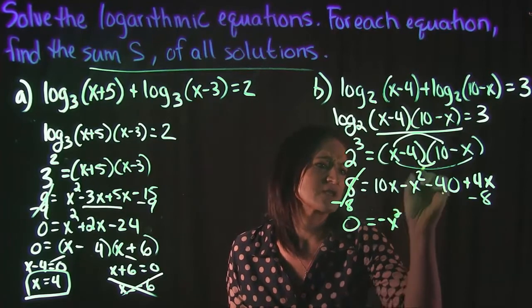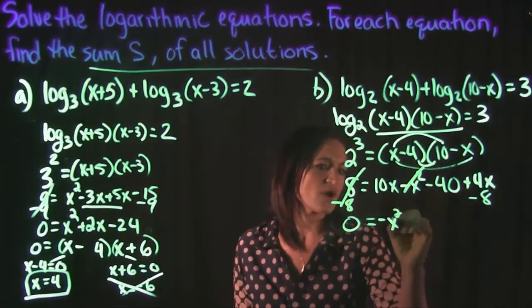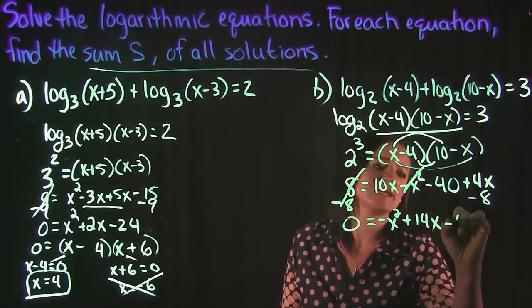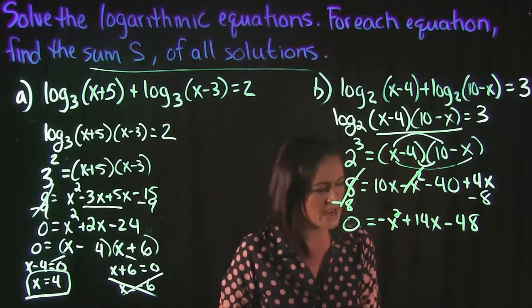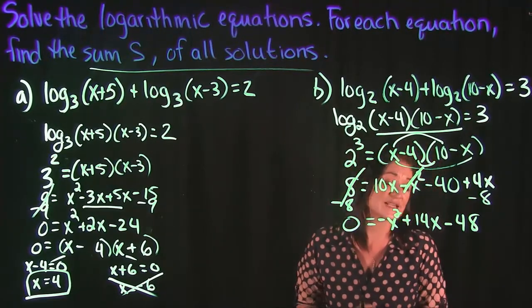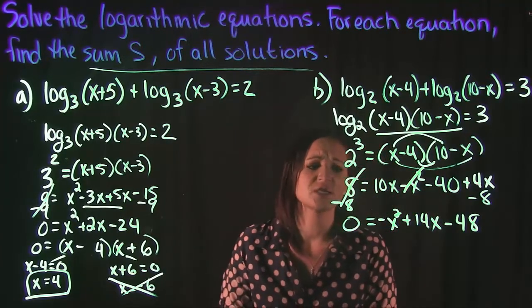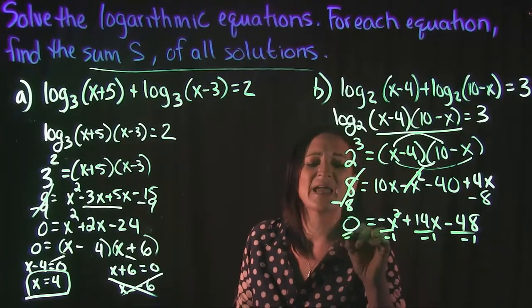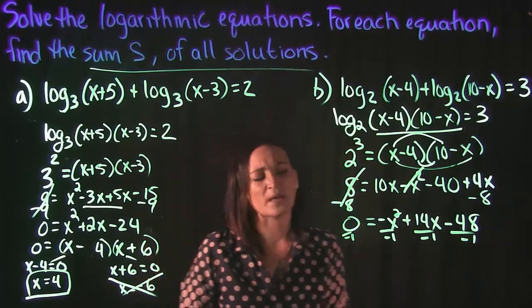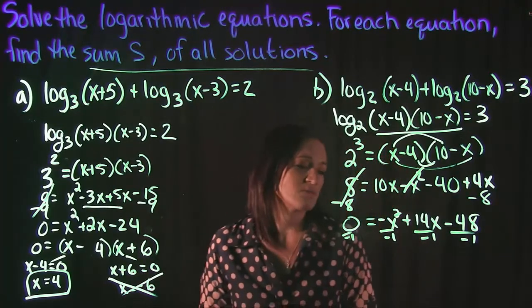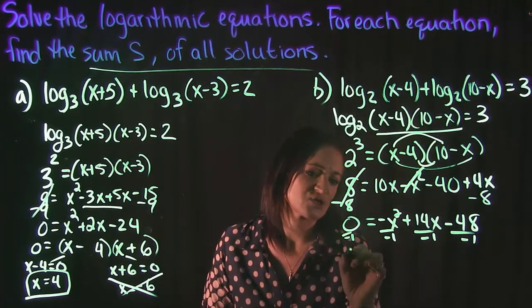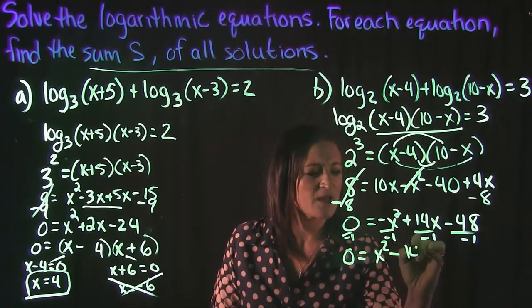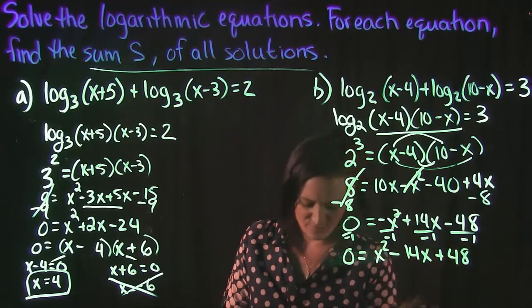I'm going to move this 8 over to the other side and combine like terms. I'll drop down the negative x squared. We have 10x and 4x that gives us 14x, and then we have minus 40 and minus 8 to give us minus 48. Since our leading coefficient is negative, I'm going to divide everything by negative 1 to get rid of that. So we get 0 equals positive x squared minus 14x plus 48.